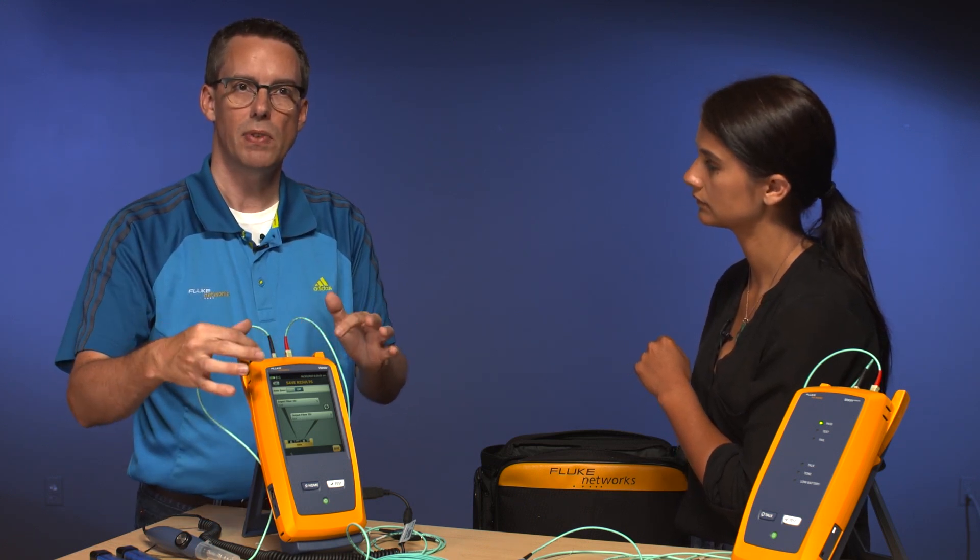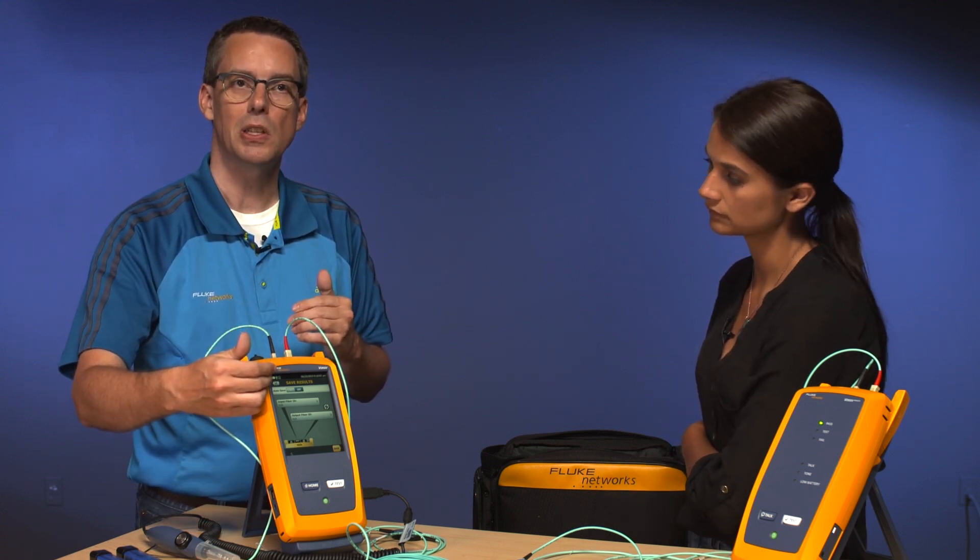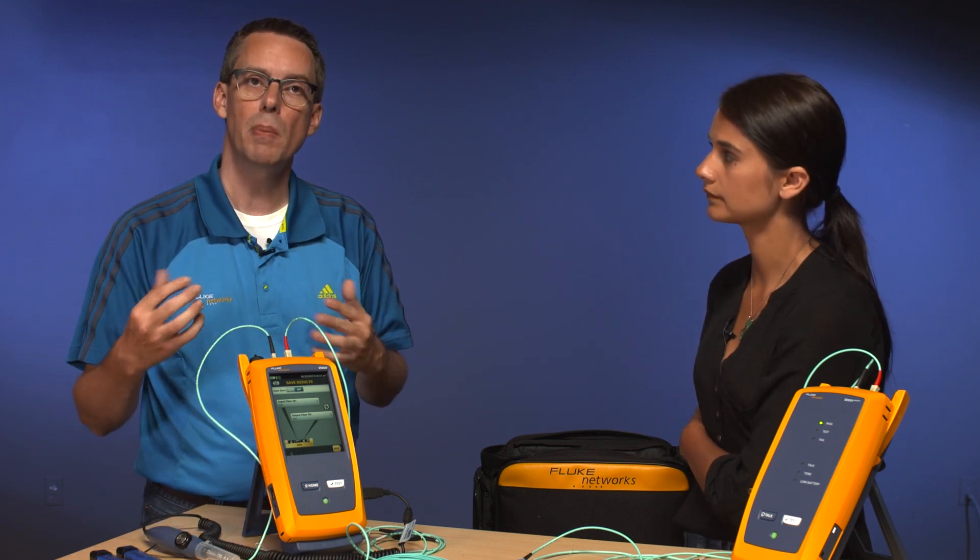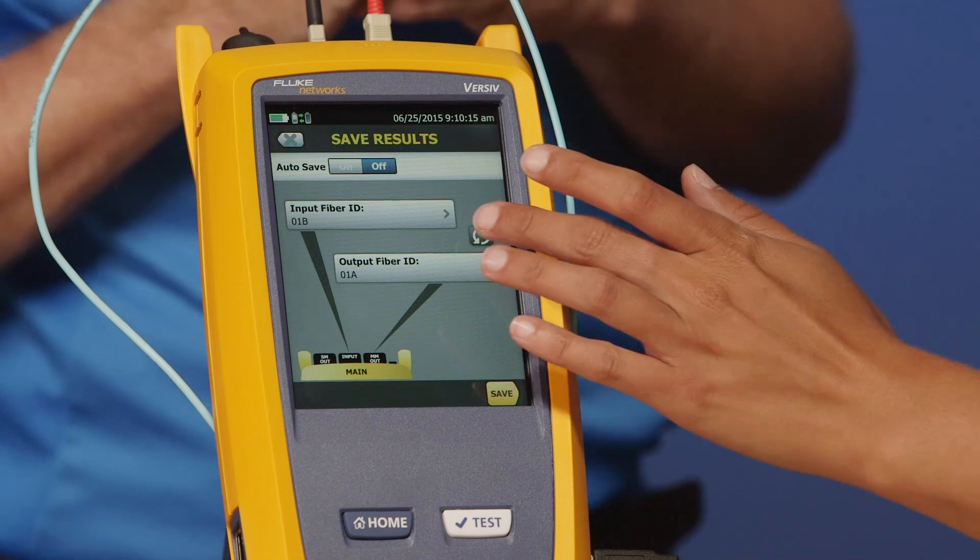If you were to do this and save it, when you go to save the next result, this fiber up here is going to be 02B and this will be 02A. So we'll actually remember you flipping that. But we do have it the right way around today, so I'm going to get you to put it back.